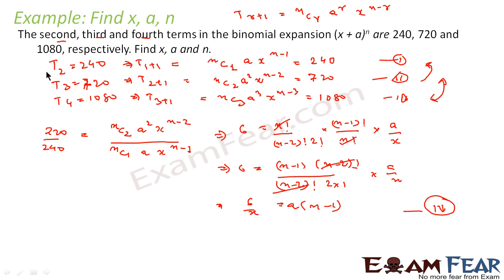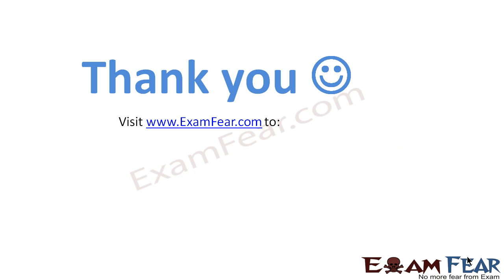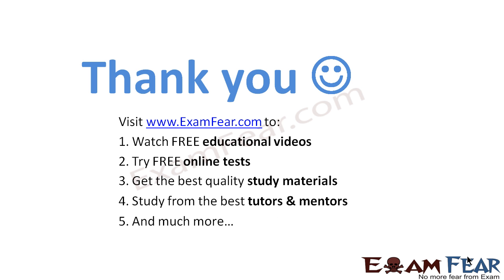To recap: given t2=240, t3=720, t4=1080, we expanded using the binomial formula to form three equations. Dividing pairs of equations gave Equations 4 and 5, which solved to give n=5. Using Equations 1 and 4 with n=5 we found x=2 and a=3. Visit examfear.com to watch free educational videos, try free online tests, and get the best quality study material. Thanks once again.